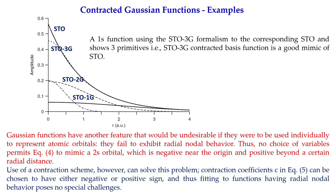In summary, the two problems of Gaussians are solved: first, by linearly combining a few Gaussians to replicate the STO; second, by changing the sign of the coefficients of the primitives to replicate the nodal behavior of the orbitals. Gaussian type functions are used in many quantum chemistry programs. In the next lecture we will discuss how many basis functions are in a basis set and how to count them.